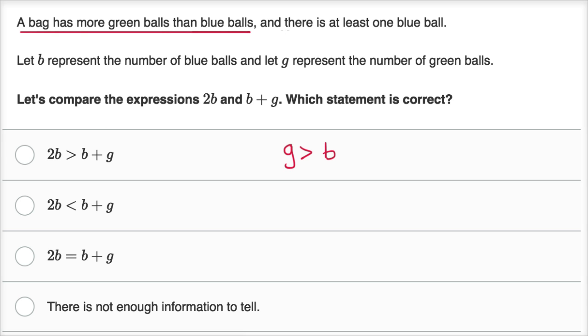It also says there is at least one blue ball. So just translating that mathematically, we know that b is going to be greater than or equal to one. There is at least one, but maybe more. So b is greater than or equal to one.